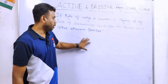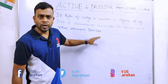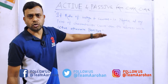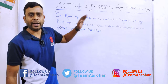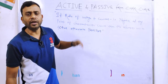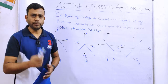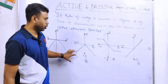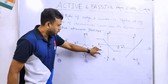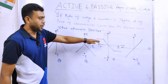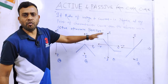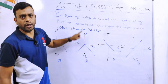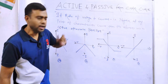Now I will show you some characteristic curves, और उस curve से हम identify करेंगे कि वो curve एक active element का है कि passive element का है। यहाँ पर मैंने कुछ characteristic curves draw किये हुए हैं। अब इन curves से हम identify करेंगे कि कौन सा curve active nature वाले element का है और कौन सा curve passive nature वाले element का है।